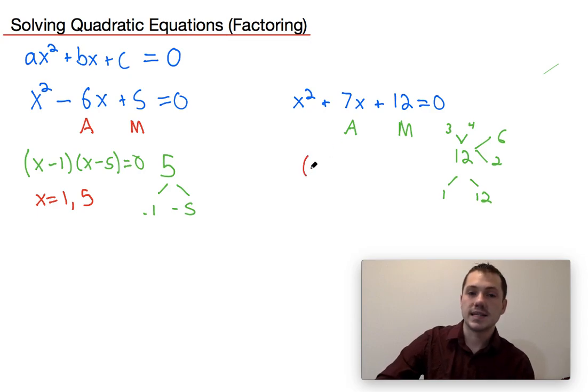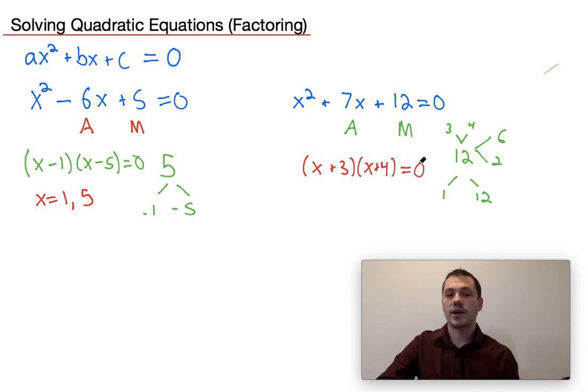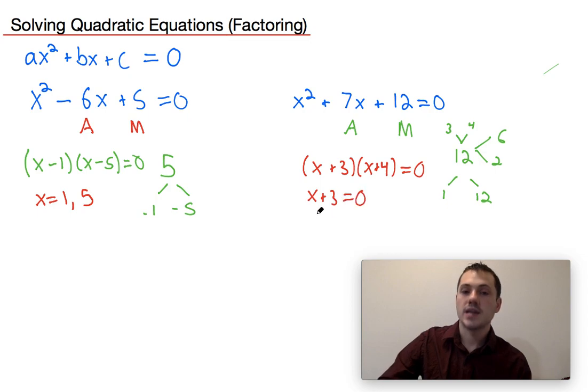So what this becomes is x plus three times x plus four is equal to zero when we factor it. And then we take each of these factors individually and we set them equal to zero. So we could have x plus three is equal to zero, which would give us x equals negative three, or x plus four is equal to zero, which would give us x equals negative four.